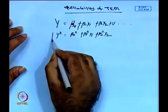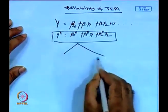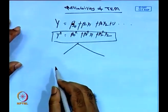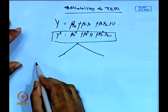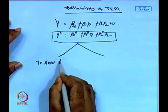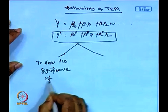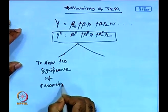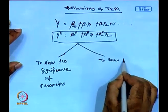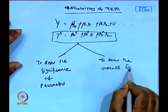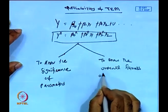For reliability, as in bivariate econometric modeling, we have to go for two different test structures: reliability with respect to parameters, and reliability with respect to overall fitness of the model. So reliability is all about two parts: first, to know the significance of parameters, and second, to know the overall fitness of the model.